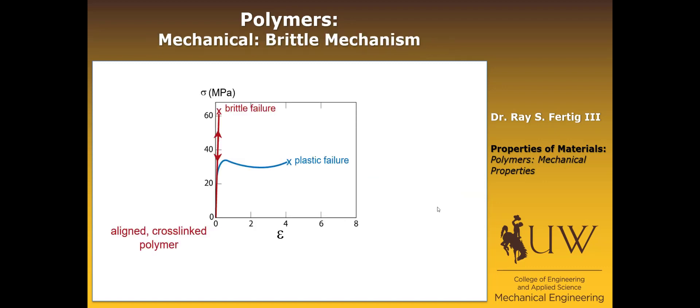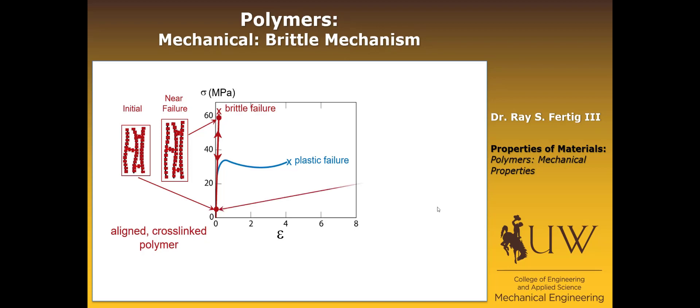So now let's talk real briefly about some of the mechanisms in these polymers. This is for the brittle failure mechanism, and in general, usually aligned cross-linked polymers and networked polymers are going to show this type of behavior. In the case of an aligned cross-linked polymer, we have chains that are aligned, and then they're cross-linked, and as we load up, those chains get stretched. So we're basically stretching the covalent bonds. That gives us a pretty stiff response. We know covalent bonds are very strong. And similarly, a networked polymer begins as this network state, and we just stretch those covalent bonds of the cross-linked network, and they stretch and or bend. That's why we get a brittle response that has a high modulus, high strength, but low strain to failure.